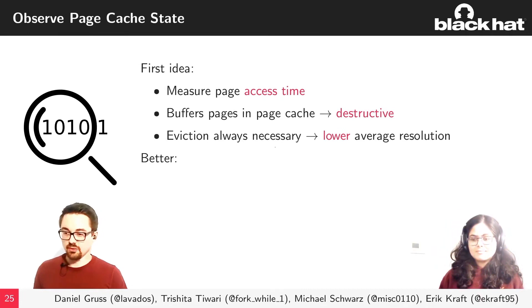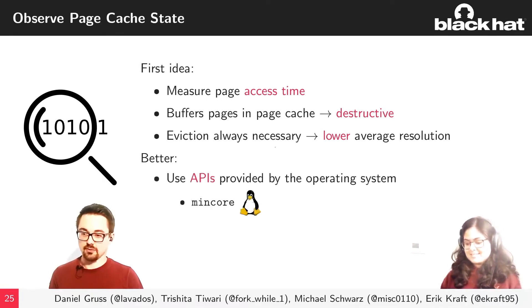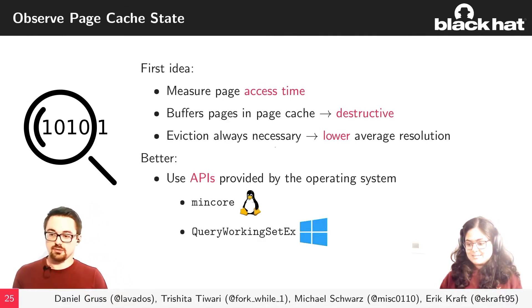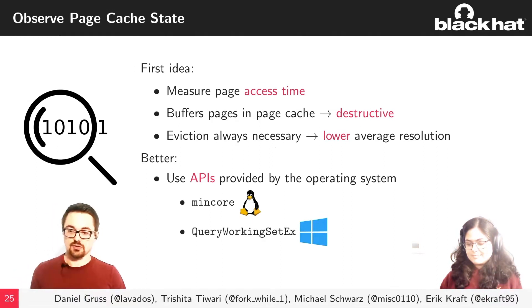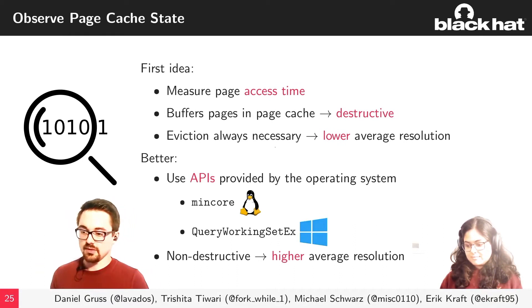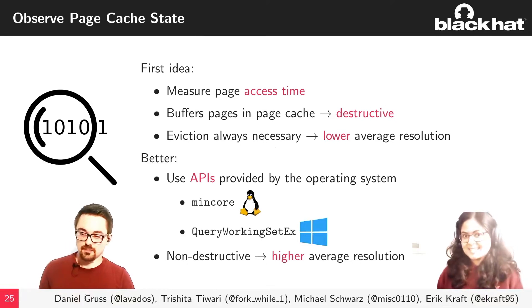Luckily, OS developers provide APIs for non-destructive probing. On Linux, MinCore takes a virtual page range and tells you if a page is buffered in the page cache. On Windows, QueryWorkingSetEx similarly provides information about a virtual page range — whether it's in the working set, how many processes use it — allowing you to deduce if a page is in use without loading it into cache yourself. Because these are non-destructive, they give a higher average resolution since you don't have to evict pages you didn't need to.